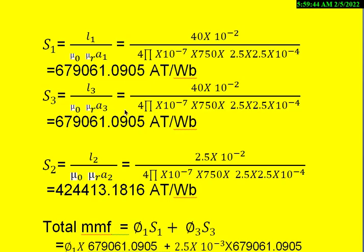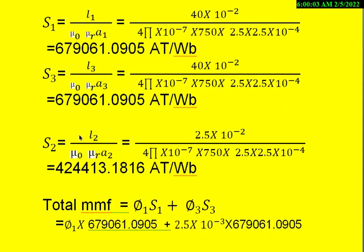Similarly, for the third part, we get the reluctance as L3 divided by mu 0 mu R into A3. L3 is given as 40 cm, so 40 into 10 power minus 2 divided by mu 0 means 4 pi into 10 power minus 7 into mu R means 750 into A3 means 2.5 into 2.5 into 10 power minus 4. Then once we simplify that, we get 679,061.0905 ampere turns per weber.